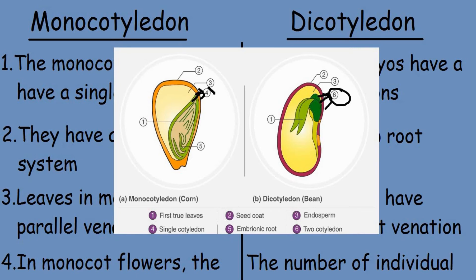The single cotyledon is marked as 6 in the monocot and as 4 in the dicot diagram. Label 1 is the first two leaves, label 2 is the seed coat, label 3 is the endosperm, label 4 is the single cotyledon, and label 5 is the embryonic root. The same labeling applies for the dicotyledon: label 1 is the first two leaves, label 2 is the seed coat, label 3 is the endosperm region, and label 6 represents the two cotyledons.